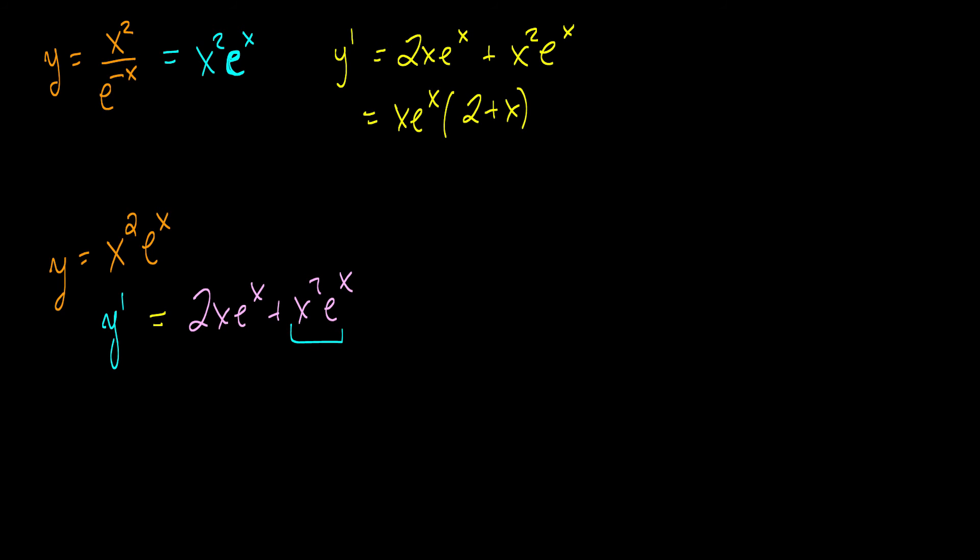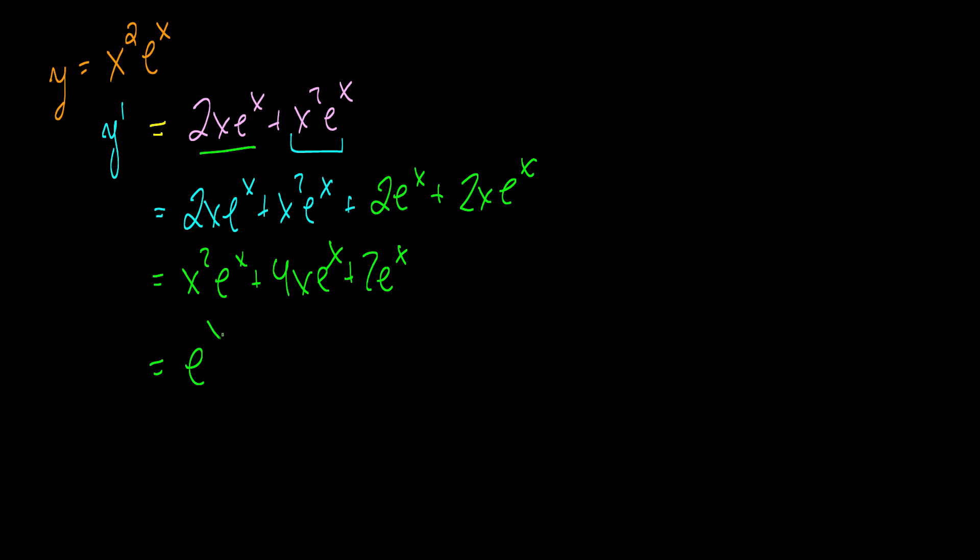Now, we already know the derivative of x squared e to the x because that was the first part of the question. So, we'll just write it down as 2x e to the x plus x squared e to the x. And now, we're going to take the derivative of 2x times e to the x. So, the derivative of 2x is 2 times e to the x plus 2x times the derivative of e to the x, which is e to the x. And, we can now simplify this further. And, this will be x squared e to the x plus 4x e to the x plus 2 e to the x, which I guess we can simplify further since I'm on a roll with simplifying all these other ones. We'll take an e to the x out and then it would be x squared plus 4x plus 1, which can't be factored out nicely. So, there we're done.